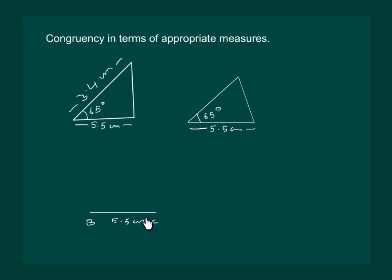Let me draw a line segment BC 5.5 cm in length. Now let me draw a 65 degree angle at B.